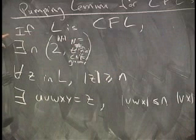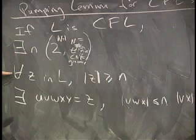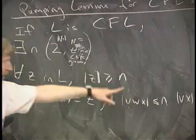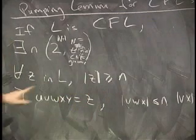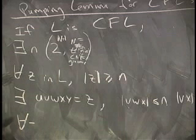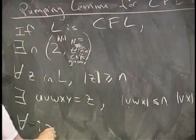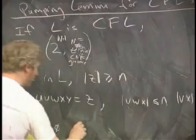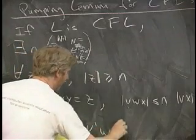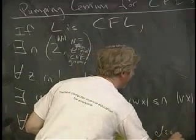So this is Jeff's turn. He gives me the number. This is my turn. I give him the string bigger than that number. This is Jeff's turn. He splits it into five parts according to my restrictions. And now this is my turn for every I greater than or equal to 0, U, V to the I, W, X to the I, Y is also in L.